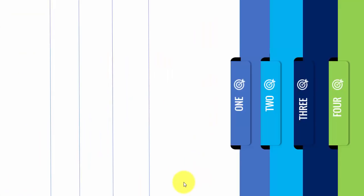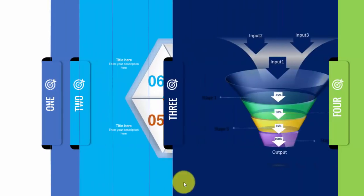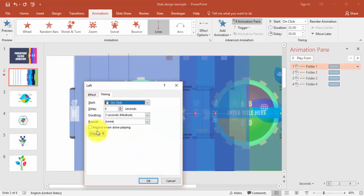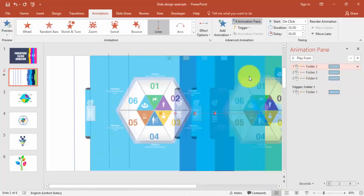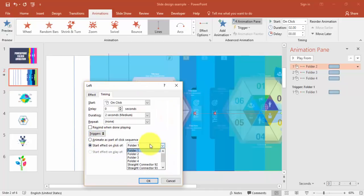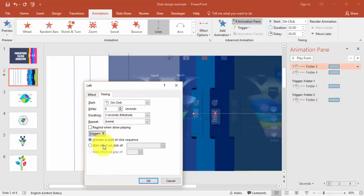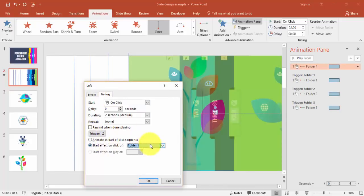Now you can see each folder moves to the correct position when clicked. To trigger each animation on clicking its own folder, double-click the animation, go to Timing, then Triggers, and set 'Start effect on click of Folder One'. Repeat for folder two, folder three, and folder four respectively.